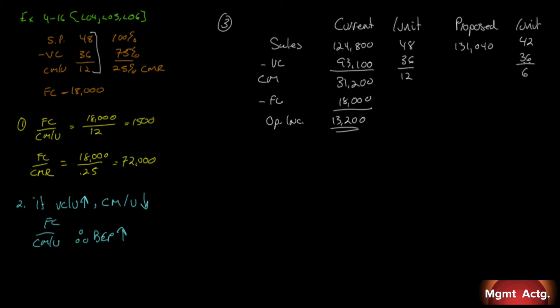It's $124 to $131,040, right? But our variable costs stayed the same at $36. But now we have to sell, we have to cover more. 3,120, not 2,600. That comes to $112,320, which gives us a contribution margin of $18,720. Our fixed costs stay the same. We're going to take off $18,000. We're left with $720 in operating income. Not such a great thing.